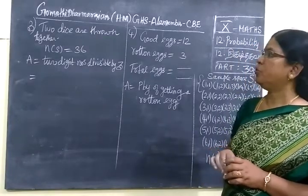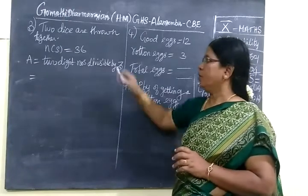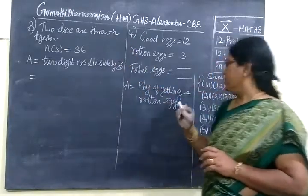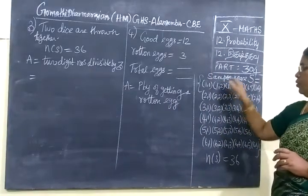In third question it is given two dice are thrown together. We are throwing two dice. It is given sample space.